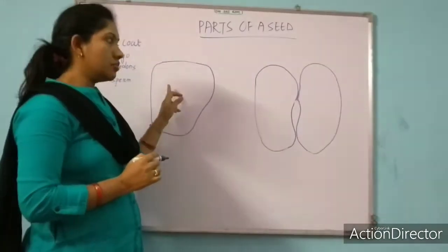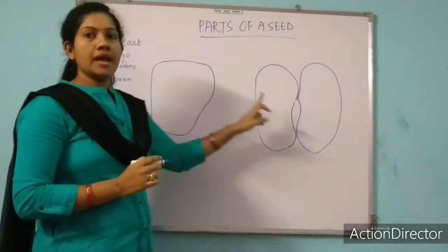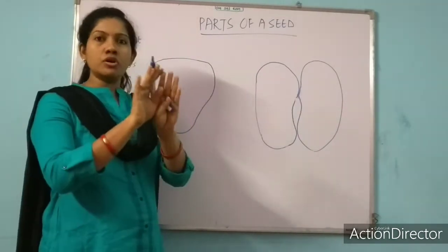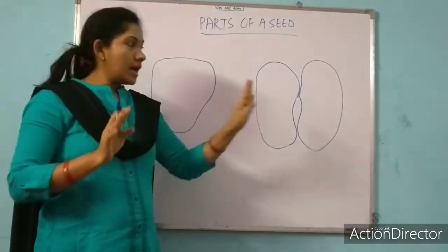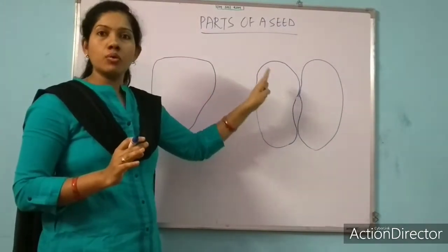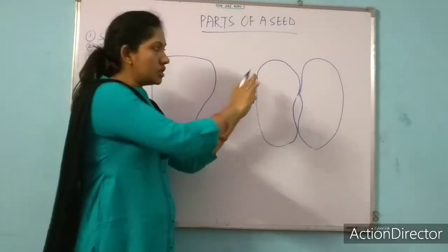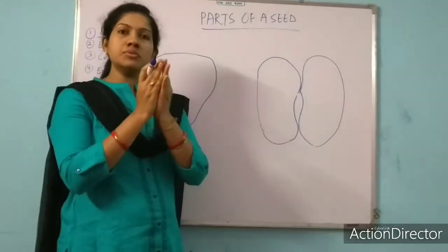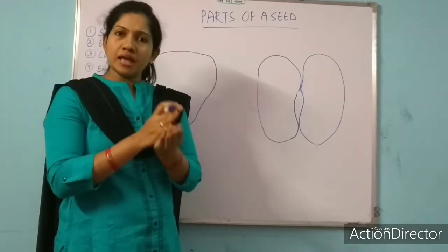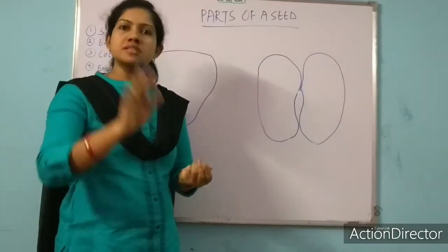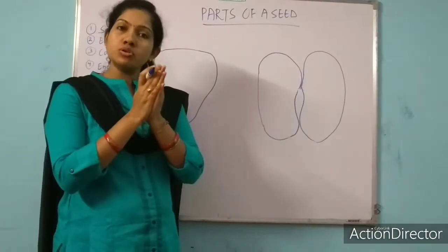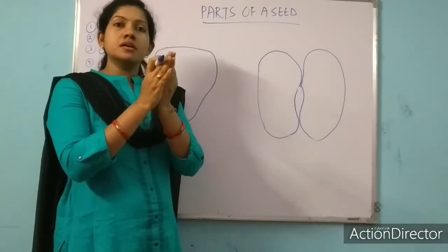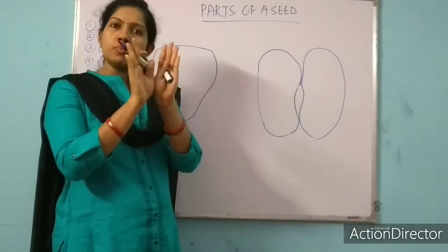So here I have drawn a monocot seed and a dicot seed. Dicot seeds are not always open — I am showing it in the open format so all the parts are clear to you. Actually it will be in closed format only. If you take a rajma seed, that will be in closed format. But when we open that seed, we can get the two parts.